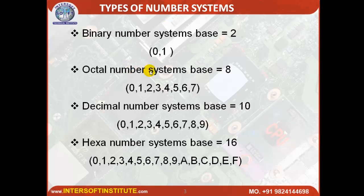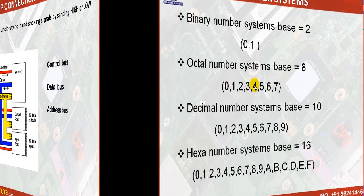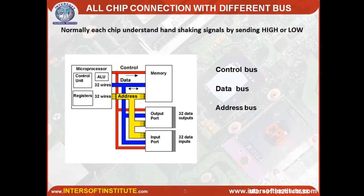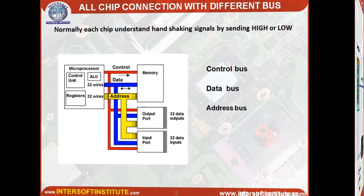Another number system is the octal system — base is equal to 8, digits from 0 to 7, so 8 characters total. The address bus determines where data is transferred. Data can be 8 bits, 16 bits, or 32 bits. Control means voltage and signals — these are the control bus.